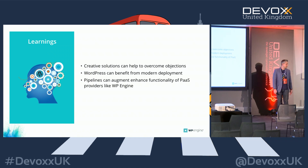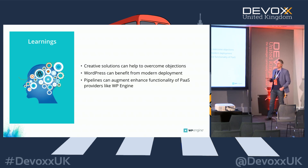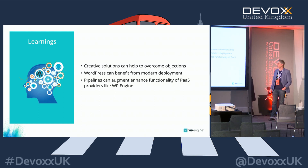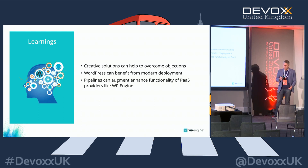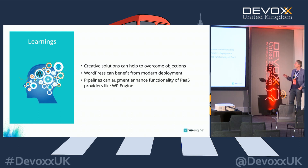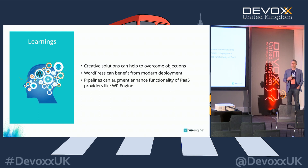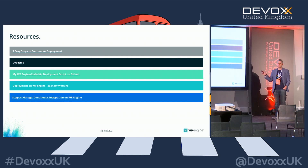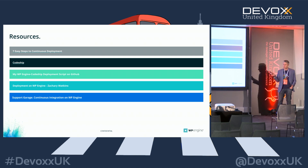What did I learn? I learned that time's up very quickly. If you're creative, you can overcome objections — I could have said no to the customer, but if you look outside of the box, sometimes you can find different ways. WordPress definitely can be used in a modern situation with deployment — I think there's a huge benefit. Pipelines from other CI/CD providers can be used with WordPress. It's actually a good thing that we don't have that built into our platform because many customers have already decided that they like one approach over another. I've got some resources here — I will put this on SlideShare and tweet that out.